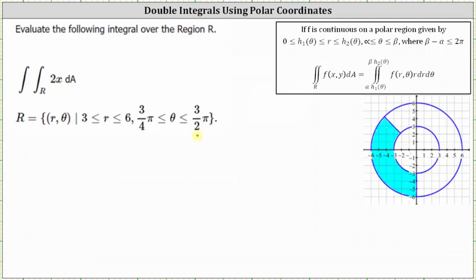Because the region R is given using polar coordinates, it'll be much easier to evaluate the double integral if we use polar coordinates. When converting to polar coordinates, remember dA equals r dr dθ, and the function 2X must be written as a function of r and theta. So let's go ahead and set this up.